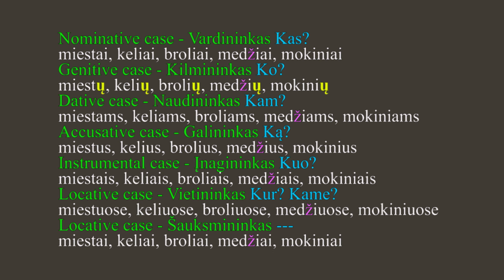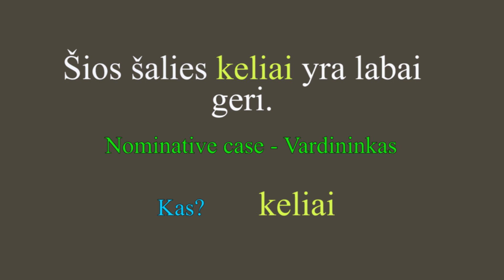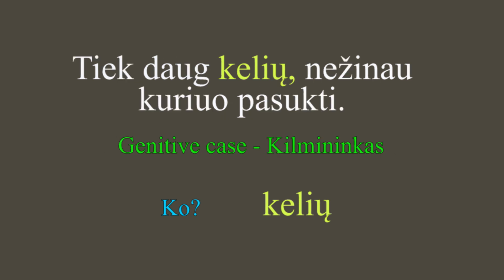Today I will use the noun keliai (roads). Vardininkas (nominative): Šios šalies keliai yra labai gerai — the roads of this country are very good. Kilmininkas (genitive): Tiek daug kelių, nežinau kuriuo pasukti — so many roads (or ways), I don't know which one to take.